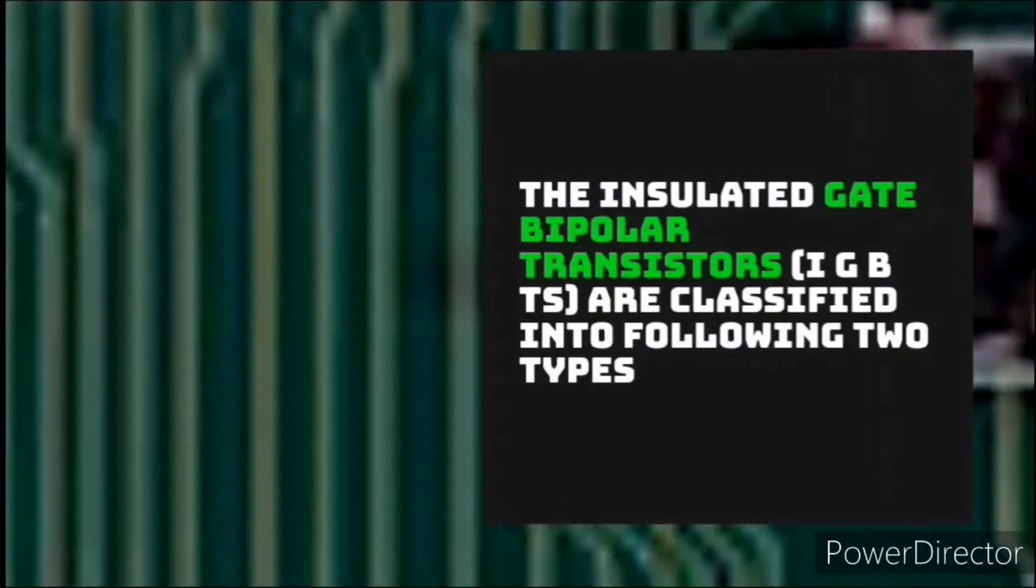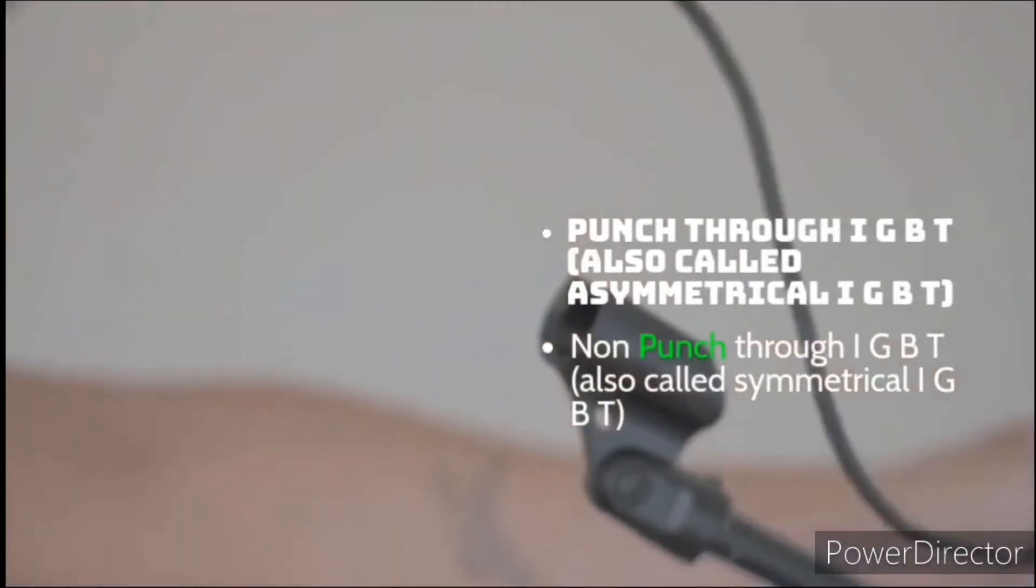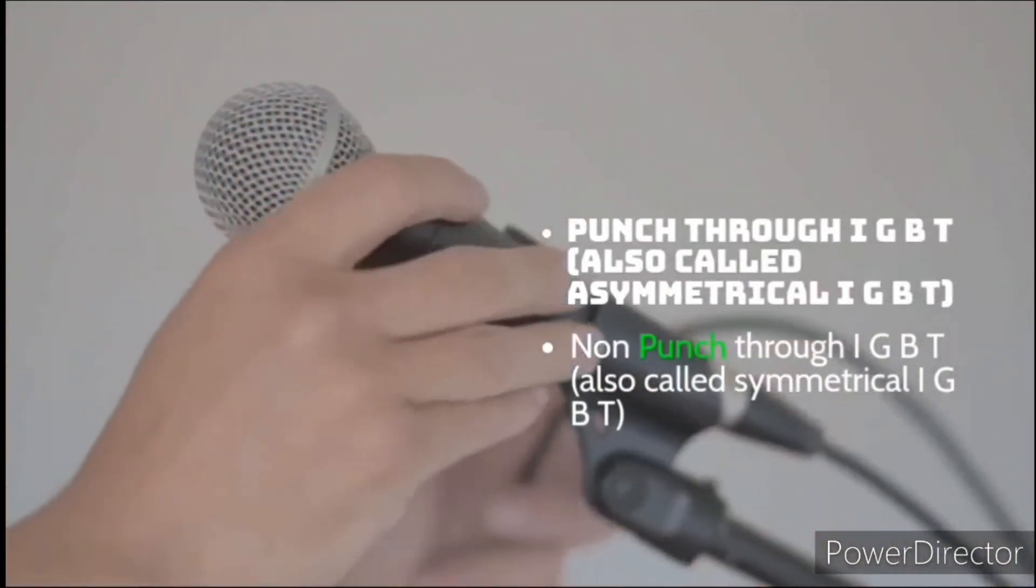The Insulated Gate Bipolar Transistors, IGBTs, are classified into following two types: Punch-through IGBT, also called Asymmetrical IGBT, and Non-punch-through IGBT, also called Symmetrical IGBT.